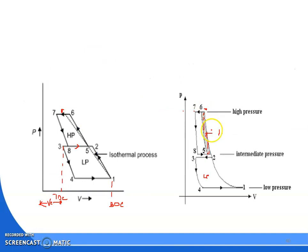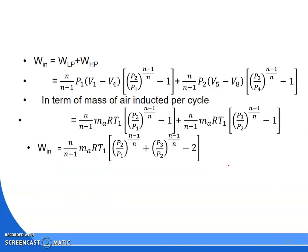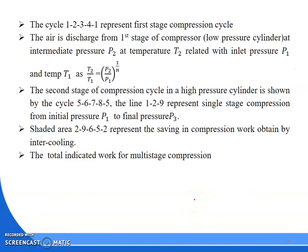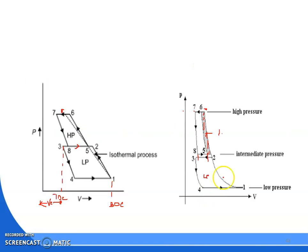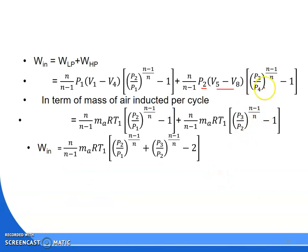For the high-pressure cylinder, the effective swept volume is (V5 - V8). The pressure at the inlet of the high-pressure cylinder is the intermediate pressure P2, and pressure increases from P2 to P3. Since the intercooler resets the temperature back to T1, the work for the high-pressure cylinder is: W = [n/(n-1)] × mRT1 × [(P3/P2)^((n-1)/n) - 1], where P3 is the delivery pressure and P2 is the suction pressure of the high-pressure stage.